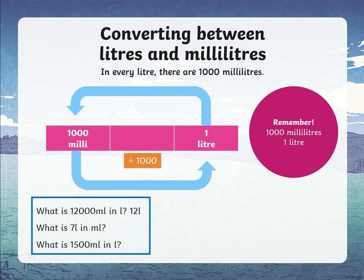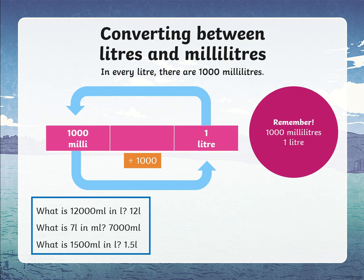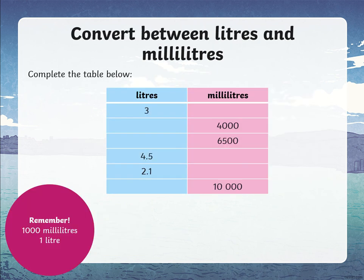Let's look at the answers: 12,000 divided by 1,000 is 12 liters. 7 liters multiplied by 1,000 becomes 7,000 milliliters. And 1,500 milliliters equals 1.5 — one and a half — liters.